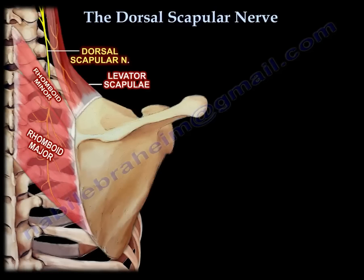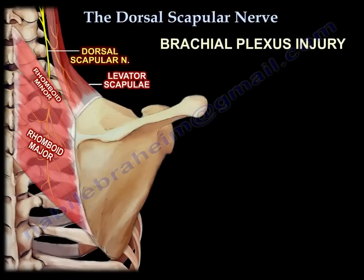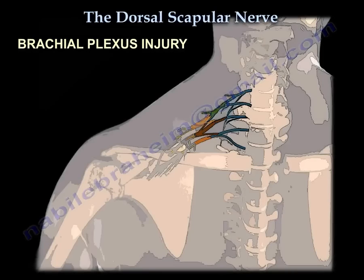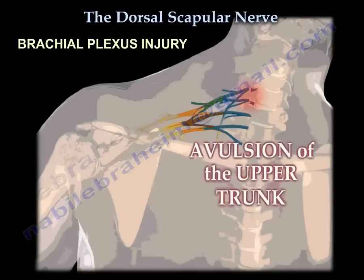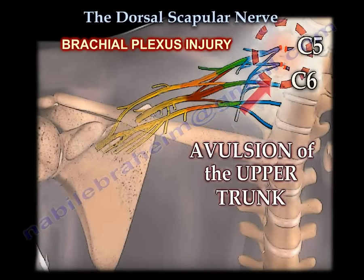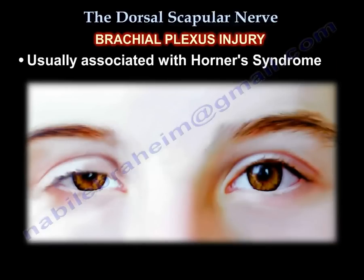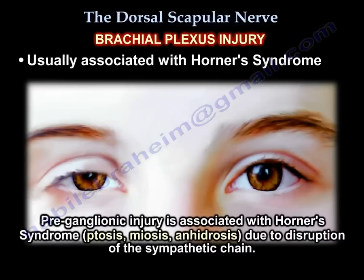Another important topic related to the dorsal scapular nerve is brachial plexus injury. A preganglionic injury, which is root avulsion, has the worst prognosis, so you need to identify it. It is usually associated with Horner syndrome — ptosis, miosis, and anhidrosis — due to disruption of the sympathetic chain.